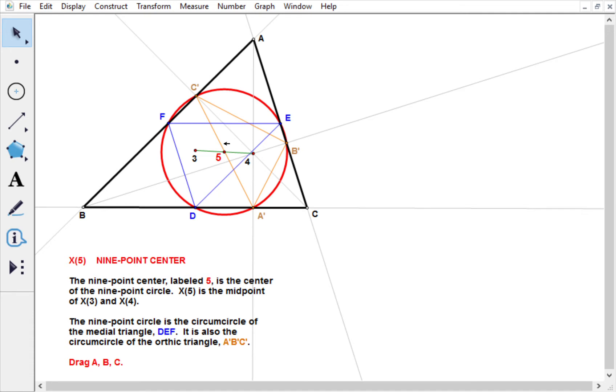First of all, it lies on the Euler line. In other words, it lies on the line from the circumcenter, point X3, to the orthocenter, X4. And in fact, it's exactly midway between those two points. So that's one way of defining it.